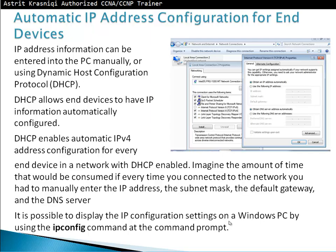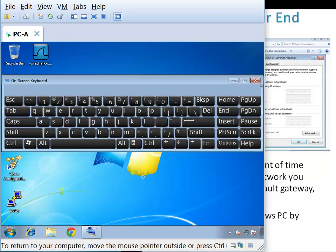Automatic IP address configuration for end devices. IP address information can be entered into a PC manually — static configuration — or we can use DHCP, Dynamic Host Configuration Protocol. DHCP allows end devices to have an IP address automatically configured for them, enabling automatic IPv4 address configuration for every end device in a network. Imagine the time consumed if every time you connected to the network you had to manually enter the IP address, subnet mask, default gateway, and DNS. It is possible to display the configuration settings on a Windows PC using the 'ipconfig' command at the command prompt.